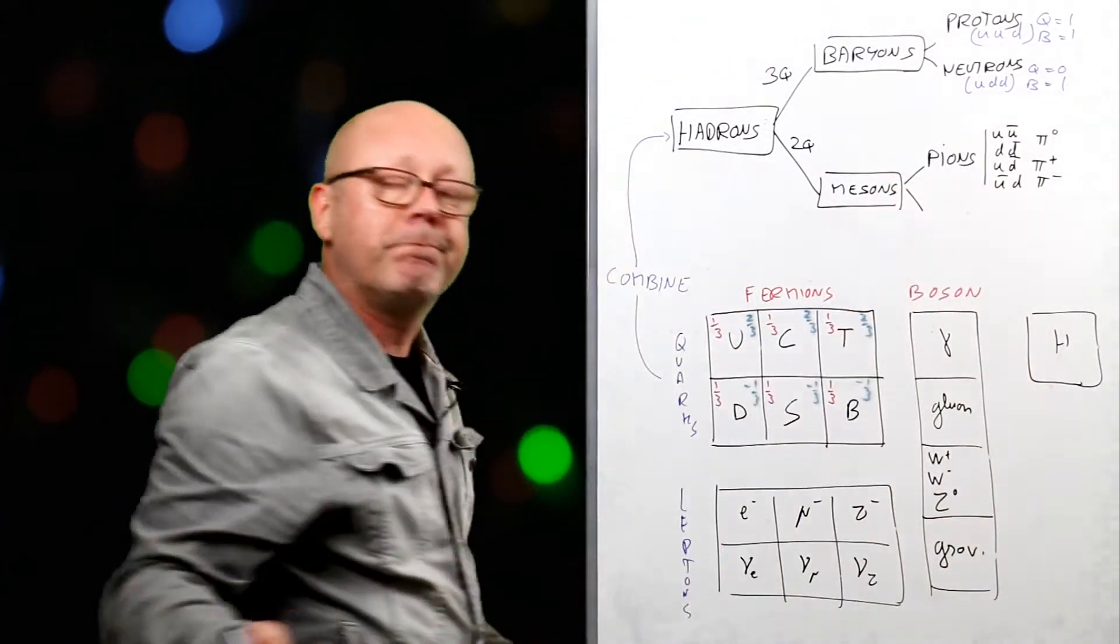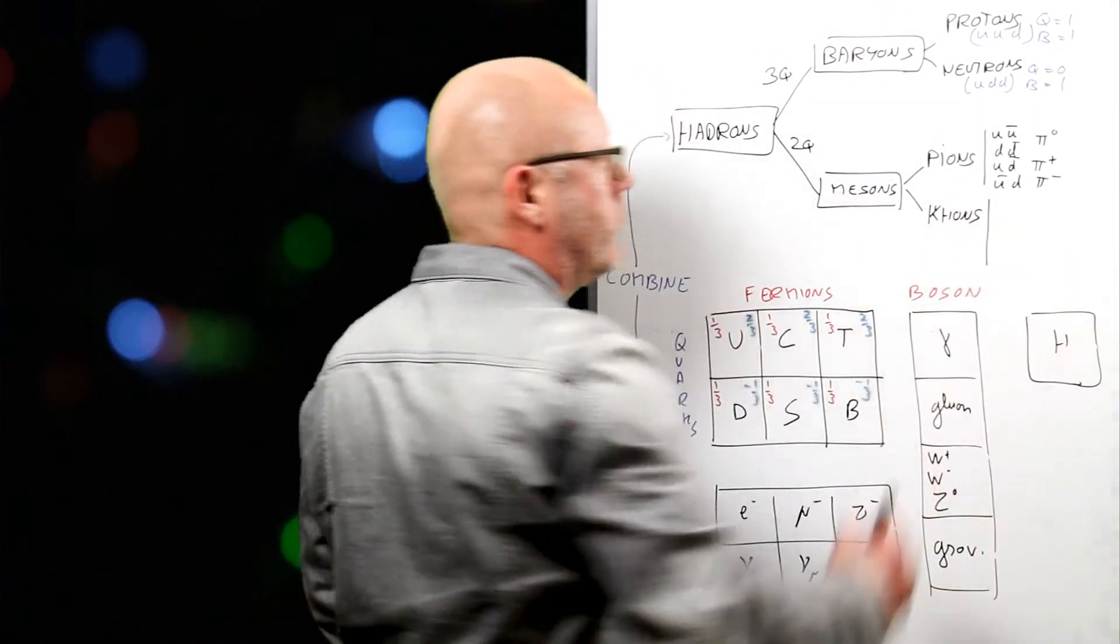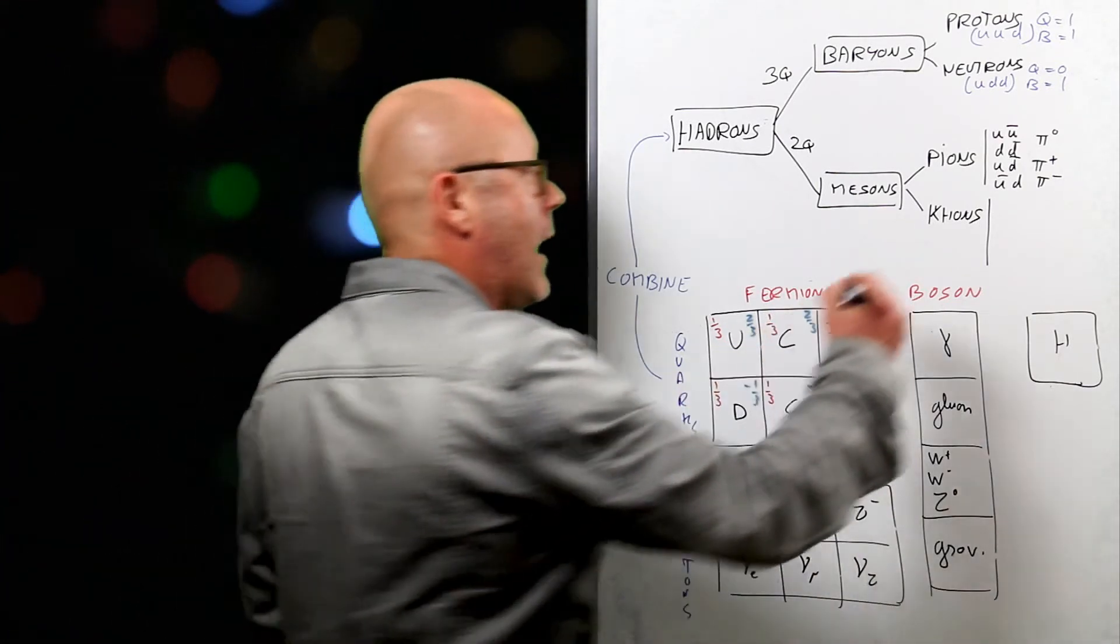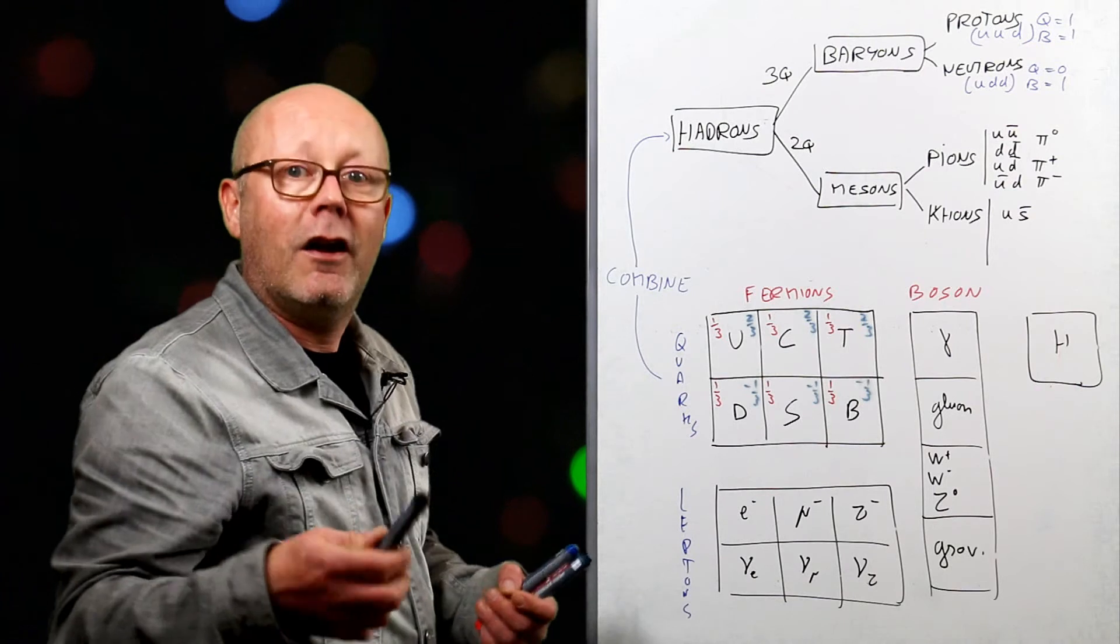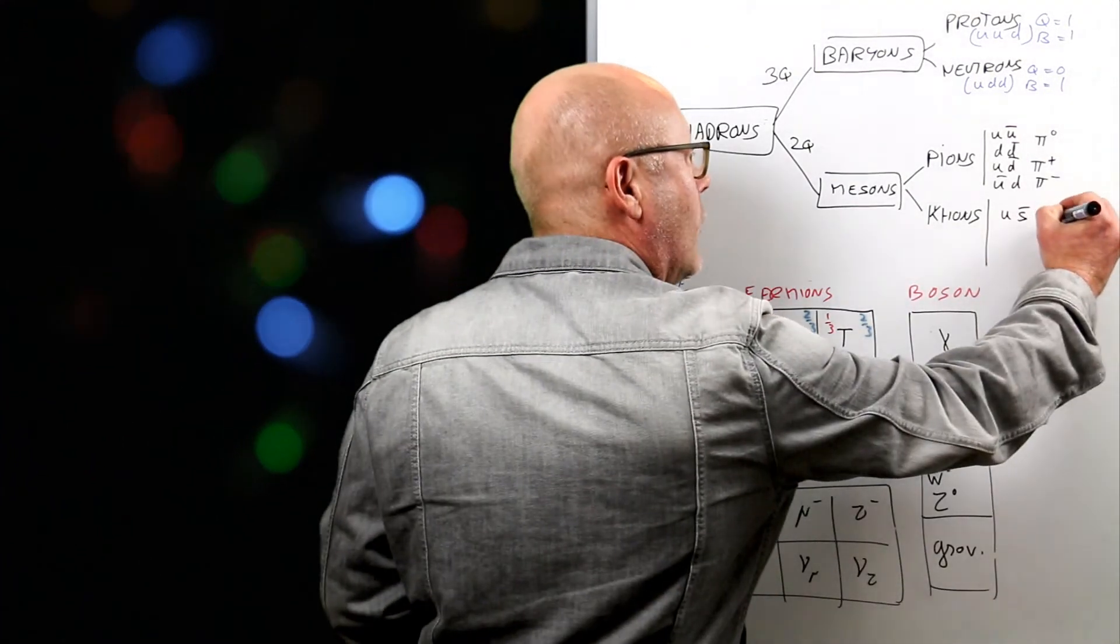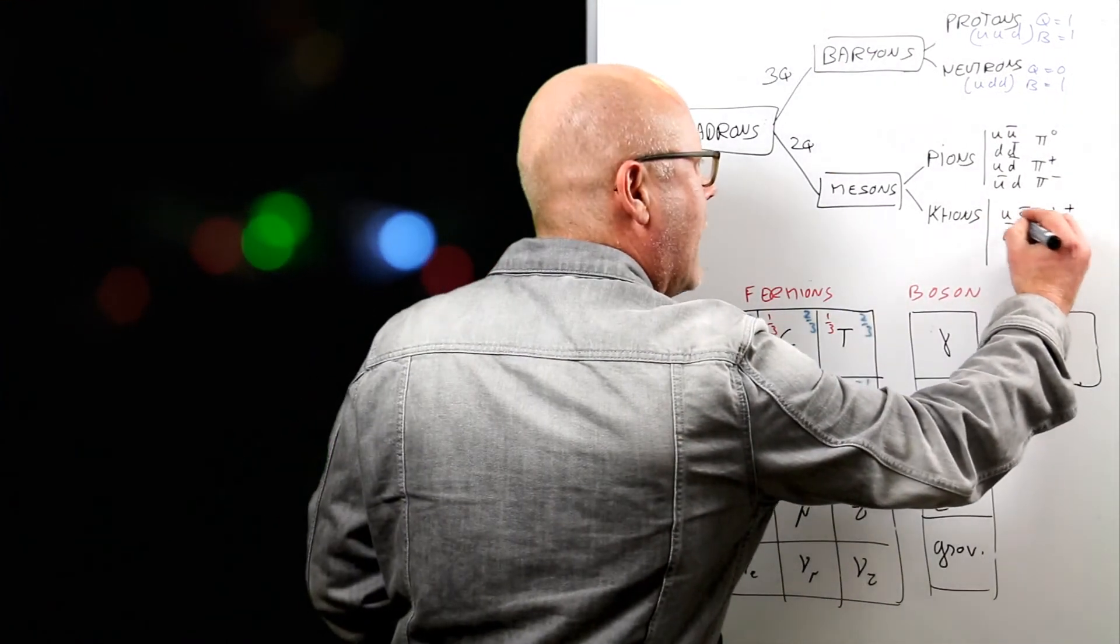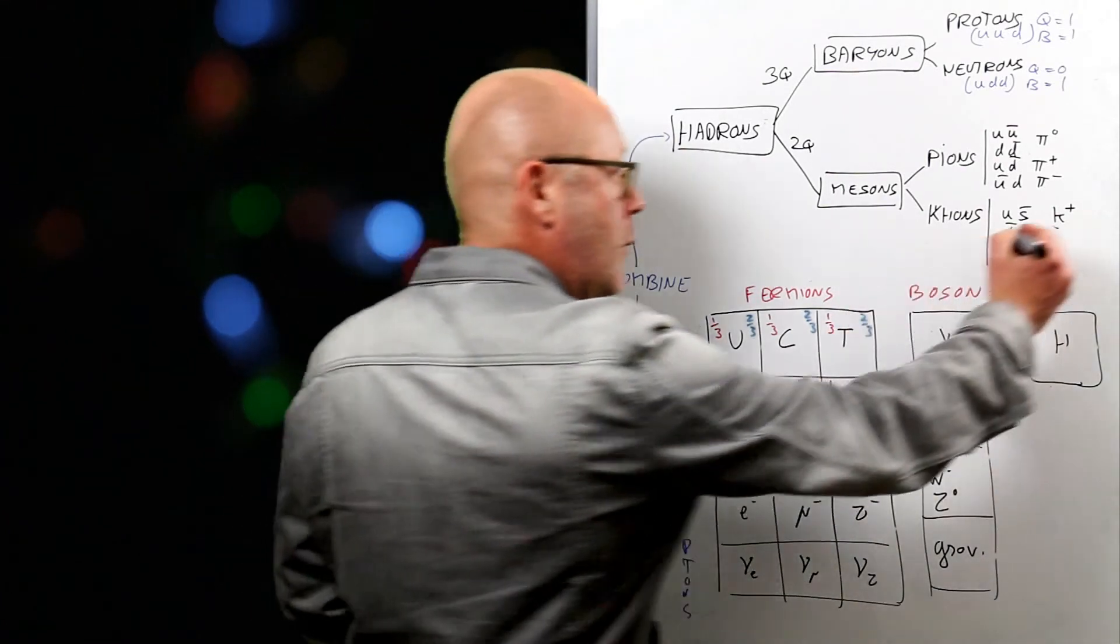Mesons come also in different types. One of these types are kaons. Kaons are also made of ups and downs, but they also all have a strange quark in them. For instance, you would have the up anti-strange. The charge of this meson would be two thirds plus one third, so a charge of one, so it would be K plus. You have different types of kaons. You can have, for instance, an anti-down strange, where that would be one third minus one third, so that would be a K zero.